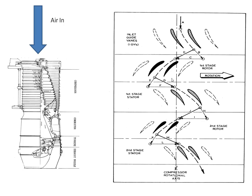Let's look at the airflow through the various parts of the compressor. We have some inlet guide vanes and we have compressor blades, then our stator blades, then onto the second stage rotors and second stage stators.